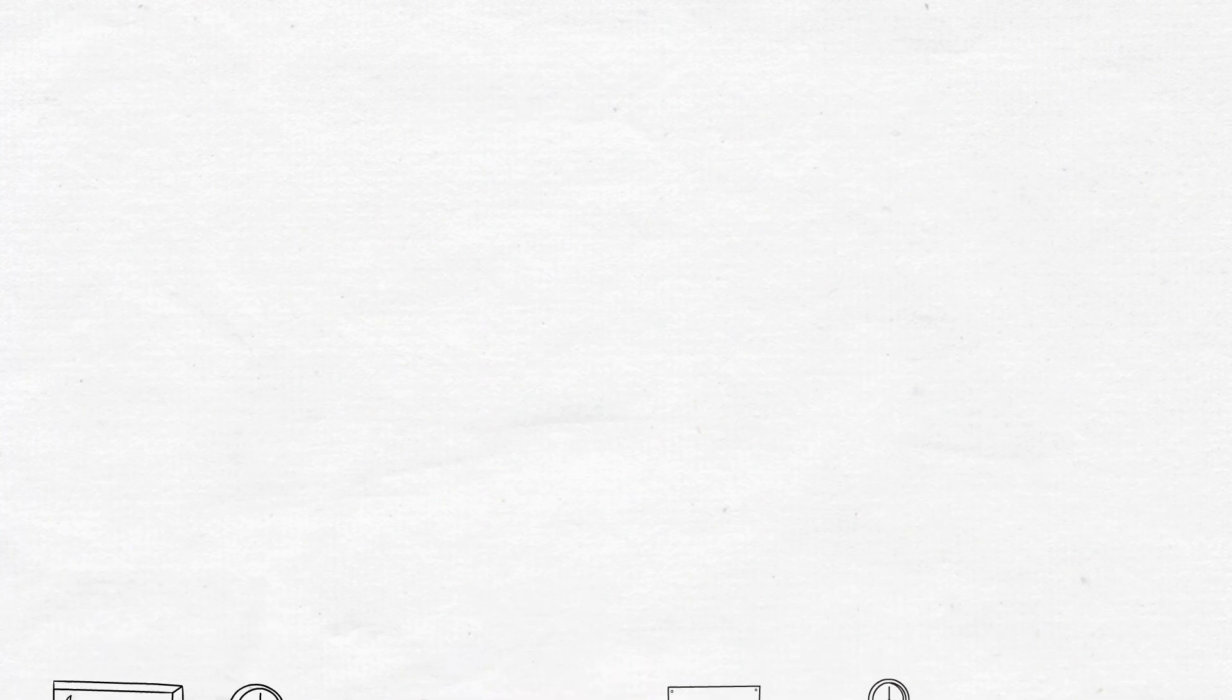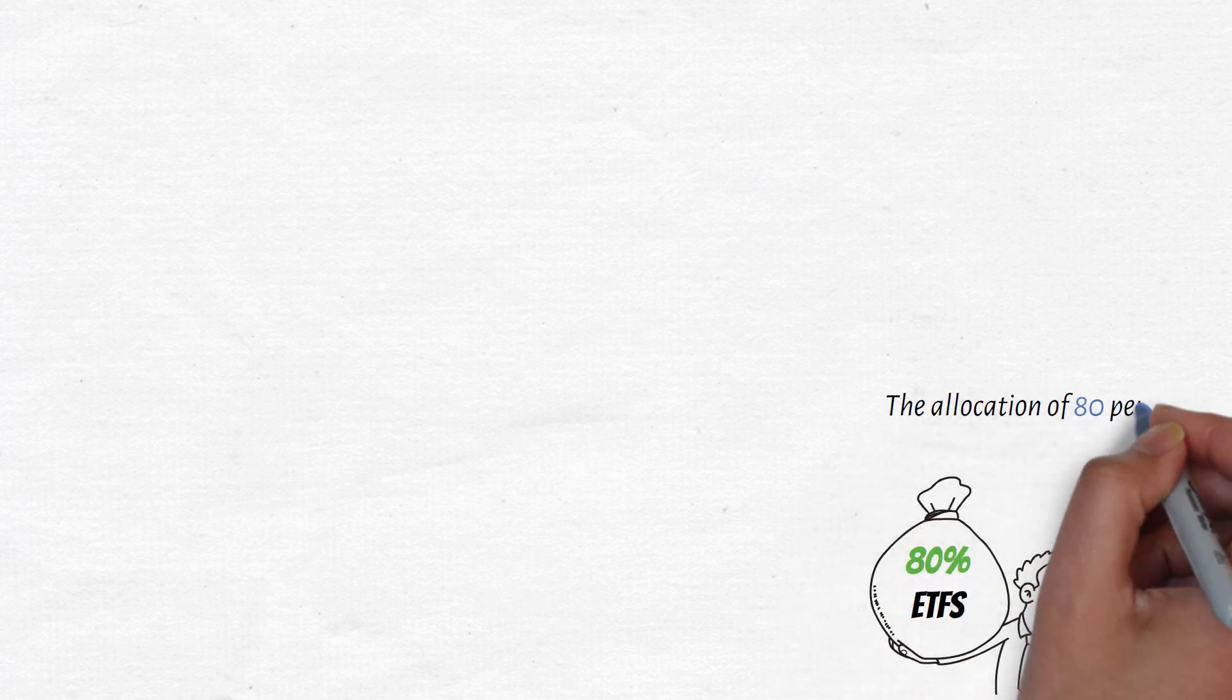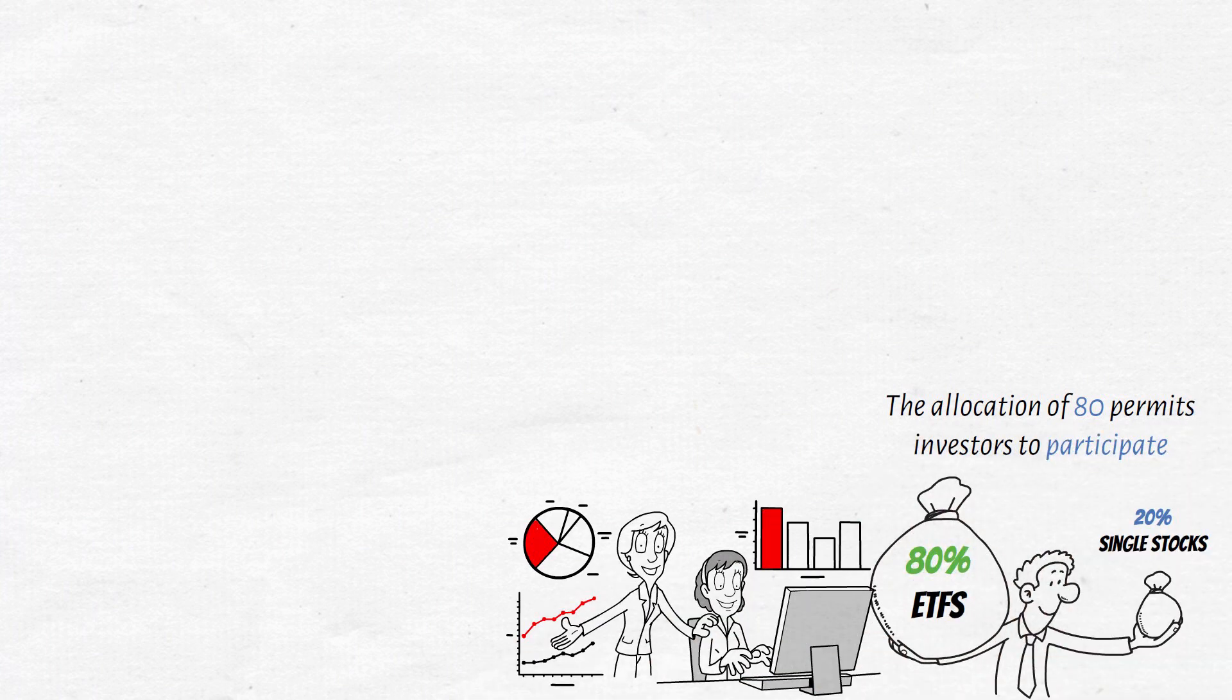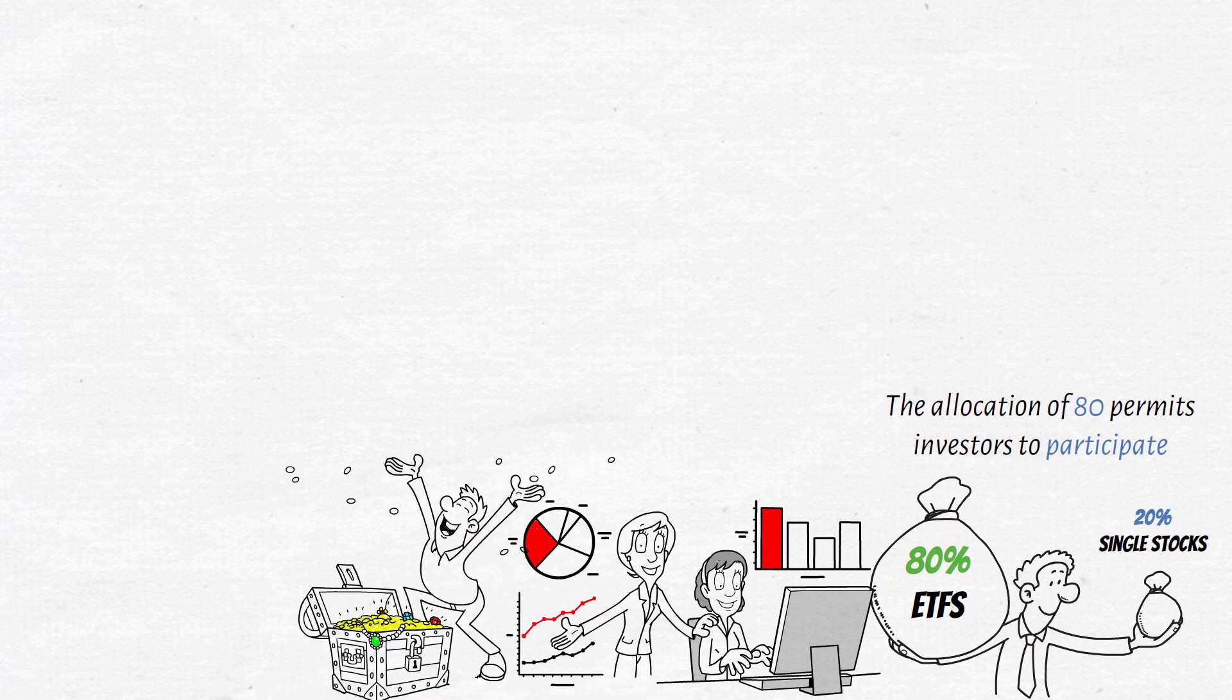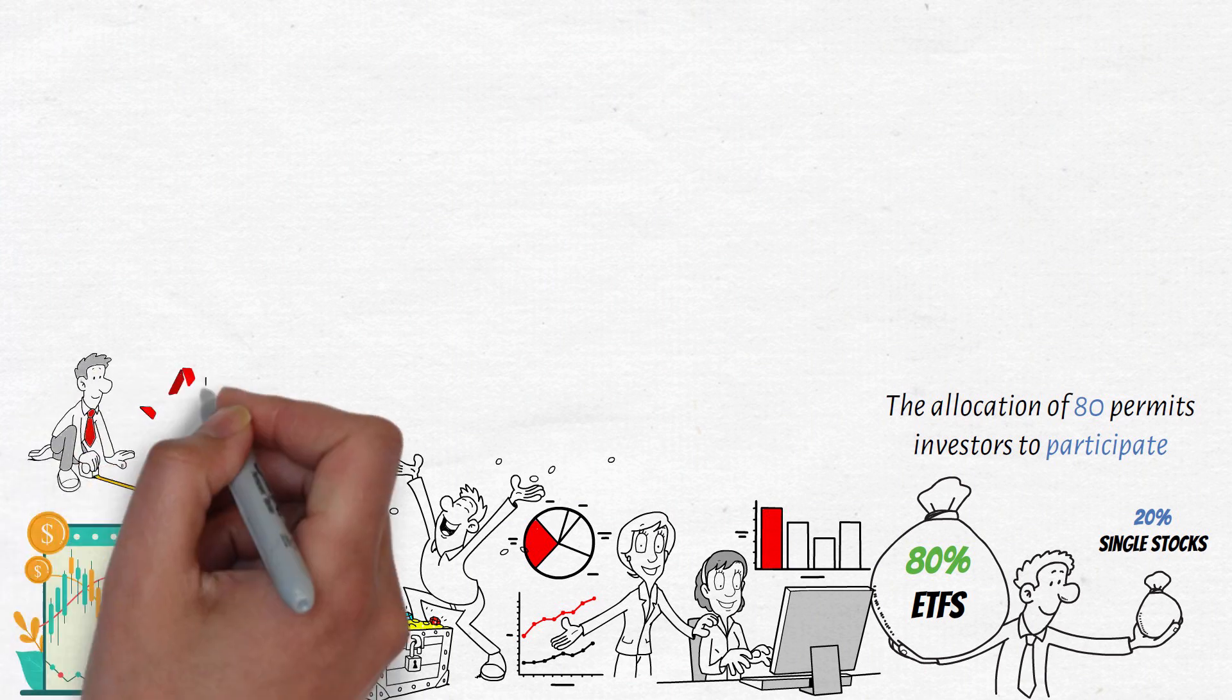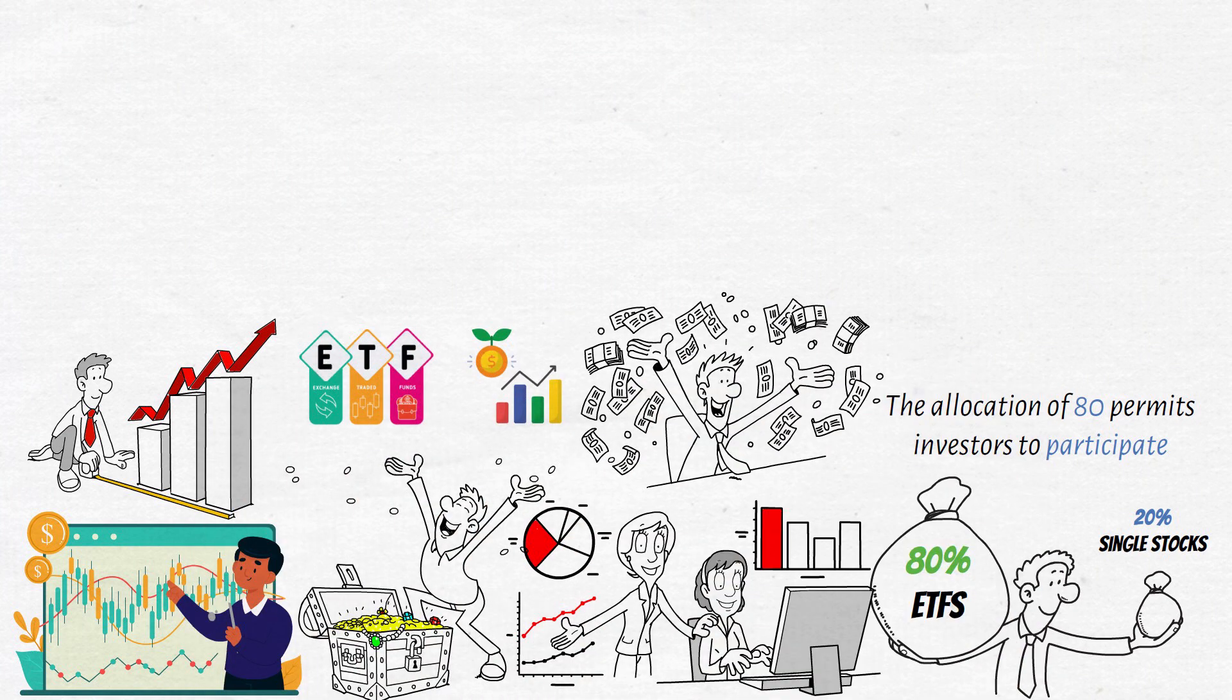A portfolio with 80% in ETFs and 20% in single stocks can be well balanced. The allocation of 80% permits investors to participate in broad market expansion, while 20% provides an element of selectivity and the possibility for bigger returns. Investors might handpick firms that they believe in, that connect with their beliefs, or that have high growth possibilities. Combining ETFs and individual stocks can provide the best of both worlds by limiting risk and maximizing potential rewards.